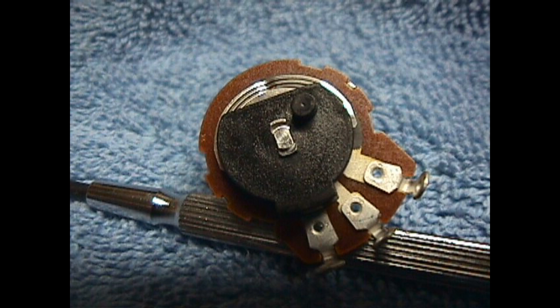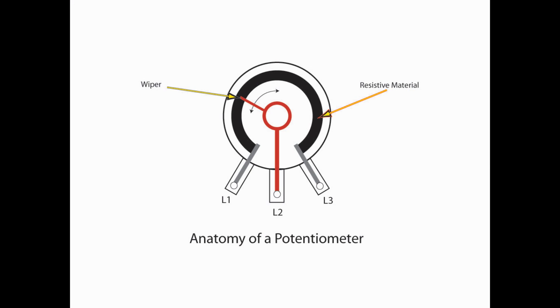Alright, if we open up a potentiometer, this is what we're basically going to see. We're going to see our three lugs, L1, 2, and 3. We're going to see a resistive material, and we're going to see a wiper that's connected to L2. And that wiper moves as we turn the knob, it's going to go clockwise or counterclockwise. That wiper is moving across that resistive material, which is going to either increase or decrease the resistance between some of the lugs in the potentiometer.